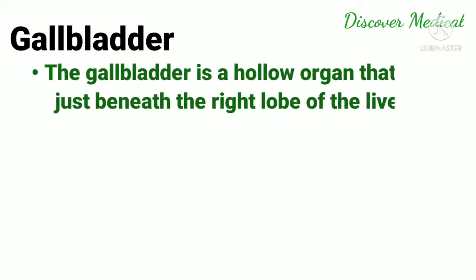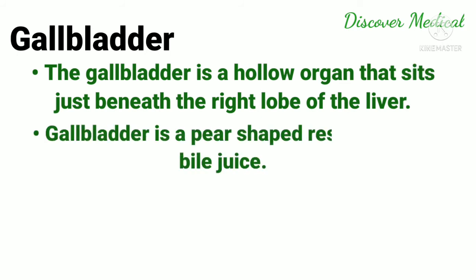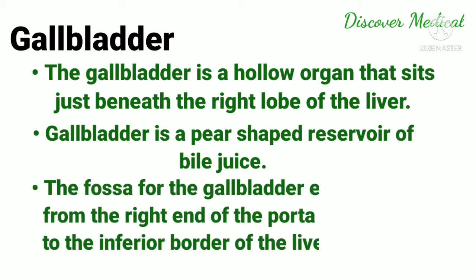The gallbladder is a hollow organ that sits just beneath the right lobe of the liver. It is a pear-shaped reservoir of bile juice. The fossa for the gallbladder extends from the right end of the porta hepatis to the inferior border of the liver.